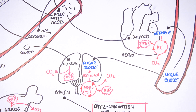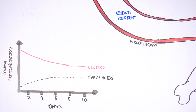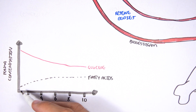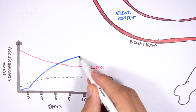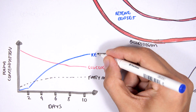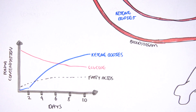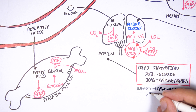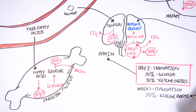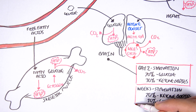Returning to the graph: after about two days of fasting, ketone body levels in the blood will significantly increase. Within about a week, ketone body levels will exceed blood glucose levels. After weeks of starvation, the brain's energy composition reverses dramatically: 70% will come from ketone bodies and only 30% from glucose.